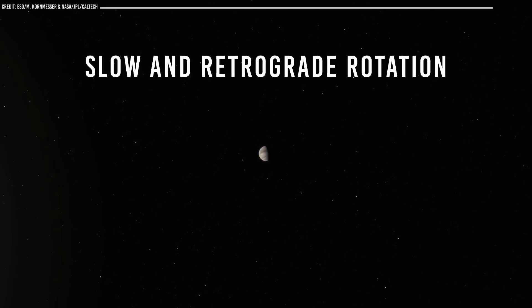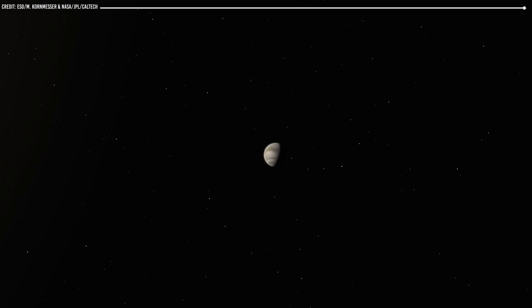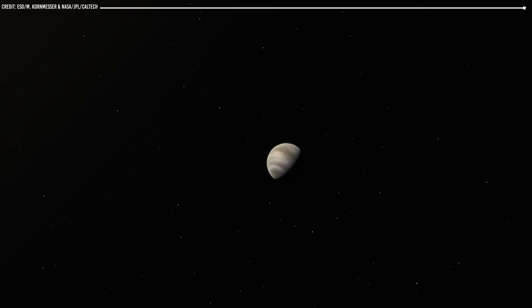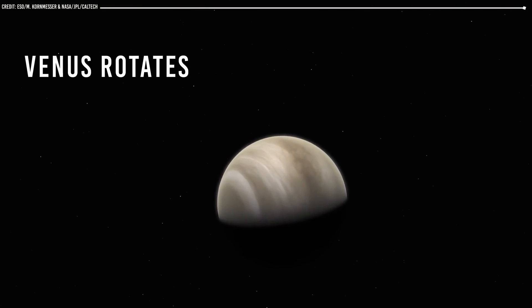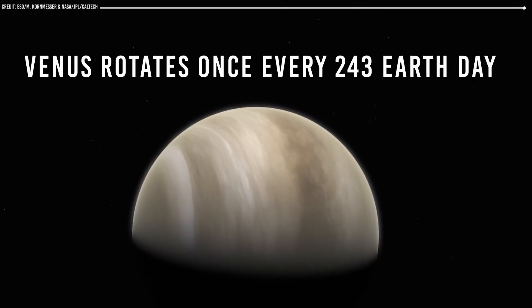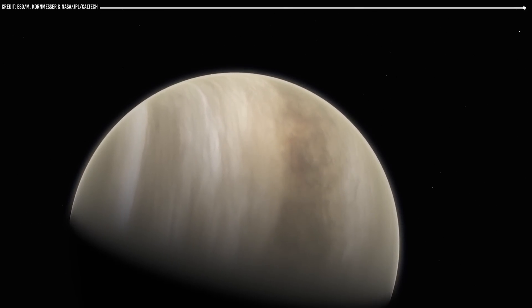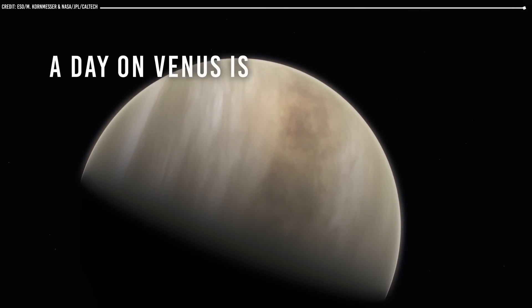Before we get into the greenhouse effect, let's address a cool point. Venus's slow and retrograde rotation is a unique feature that may have played a role in its extreme atmospheric conditions. Venus rotates once every 243 Earth days, which is longer than its year, meaning that a day on Venus is longer than a year.